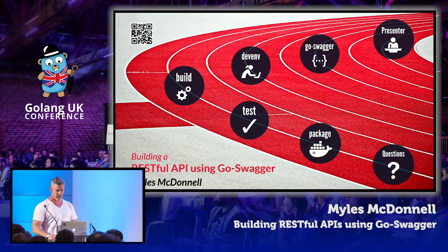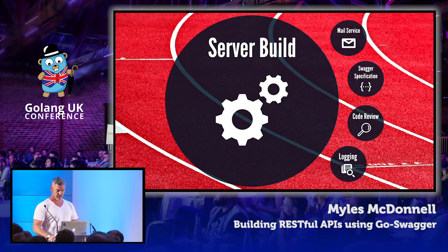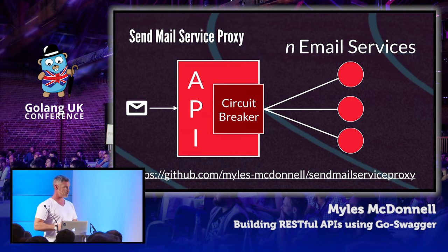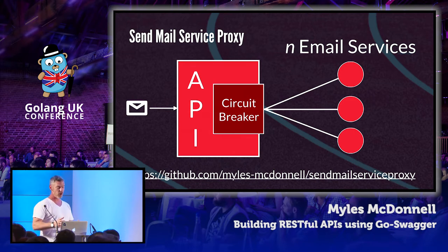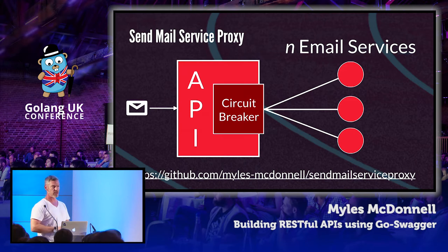So let's have a look at the build. I've got a somewhat contrived, though fairly useful, demonstration application. We're going to have an API which fronts for any number of email services at the back end. You can send an email to this API and it will send your email on via one of the services.